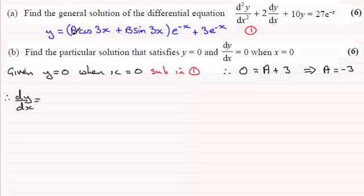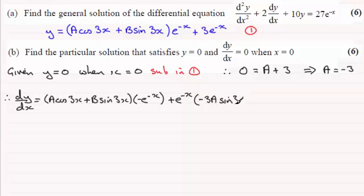So if I take the first part here A cos 3x plus B sine 3x, multiply it by the differential now of e to the power minus x which is minus e to the minus x. And then it's going to be plus, take this part here, e to the minus x, multiply it by the differential of this part which is going to be minus 3A sine 3x and then plus 3B cosine 3x.